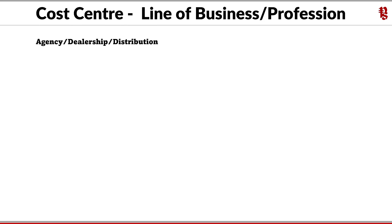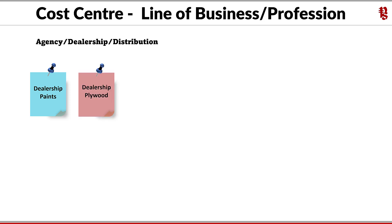Business vertical: agency, dealership, or distribution. These organizations would want to track the profitability or performance of the product lines they are dealing in. For example, a dealership in paint — paint as a product cost center. The next is dealership of plywood, and the next is dealership in sanitary items or sanitary products.